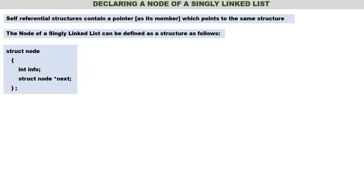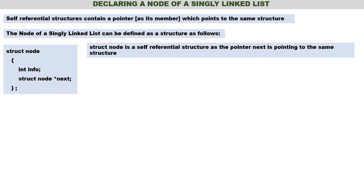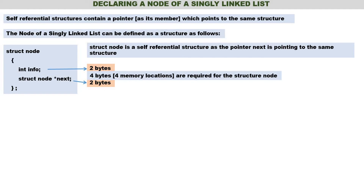struct node { int info; struct node *next; }. Here 'info' is the first member of type integer. 'next' is a pointer — but what type of pointer? It is a pointer to struct node itself. Within the declaration of struct node, there is a pointer to struct node as a member, therefore it is a self-referential structure. info requires two bytes and next, being a pointer, requires two bytes — so totally four bytes are required for struct node.